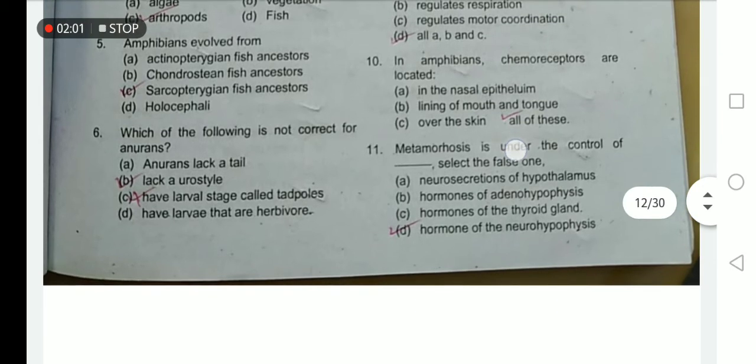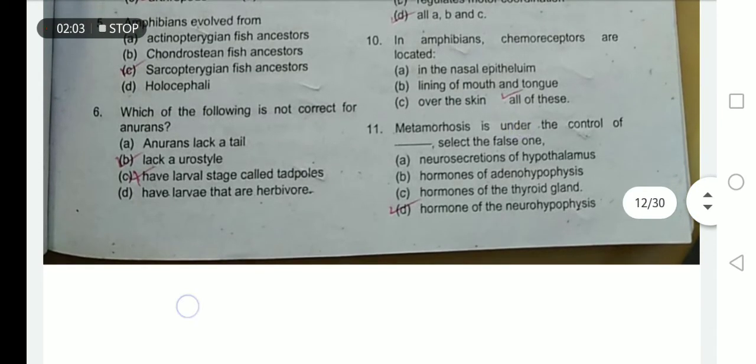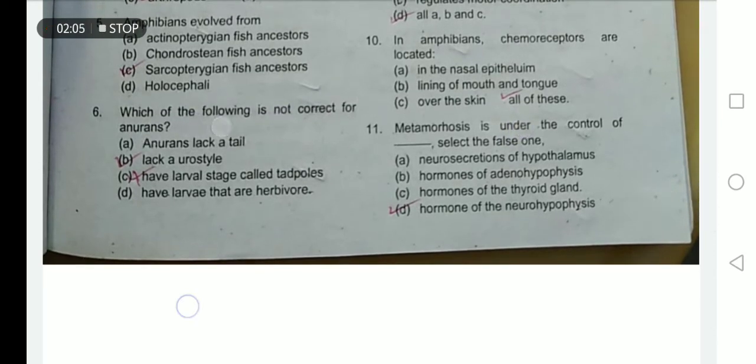These chemoreceptors are involved in the testing of substances and also receive stimuli over the skin, so option D is the correct option.